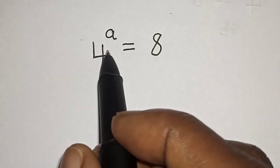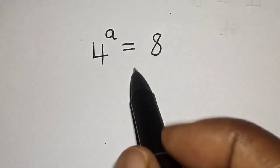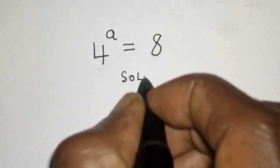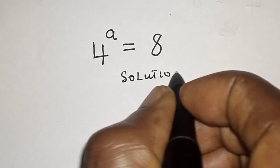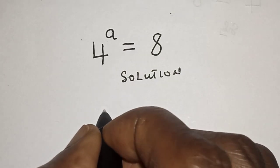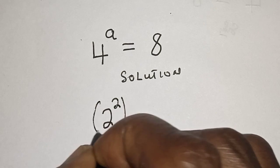Hello, welcome to Magist. In this class I want to find the value of a from this equation. Like, share, comment and subscribe. Solution: 4 raised to power of a can be written as 2 square raised to power of a.